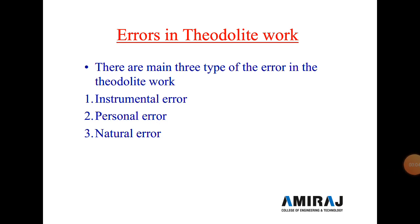Hello students, today we start a new topic in the subject Surveying: Chapter 2, Theodolite Traverse. Today's topic is errors in theodolite. In all surveying works there are three types of errors: instrumental error, personal error, and natural error. These three types of errors apply to all instruments and all surveying work. In a G2 examination, questions are asked to enlist the errors in theodolite work and explain any one or two in detail.